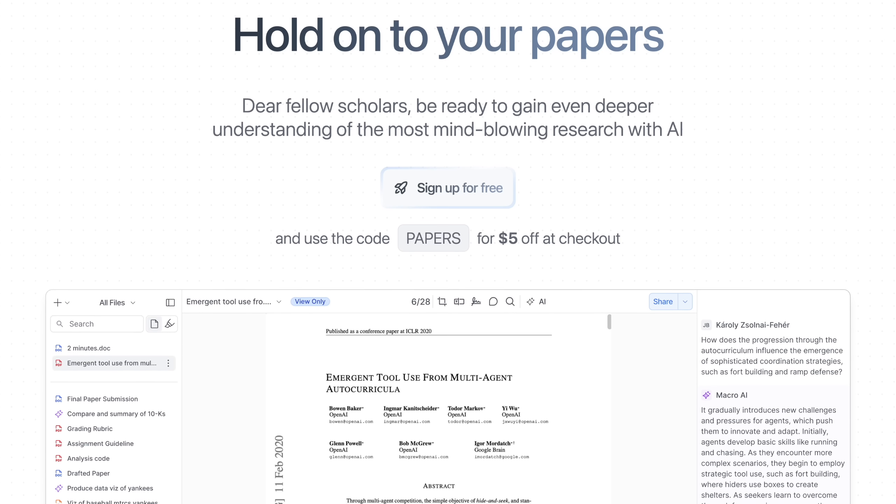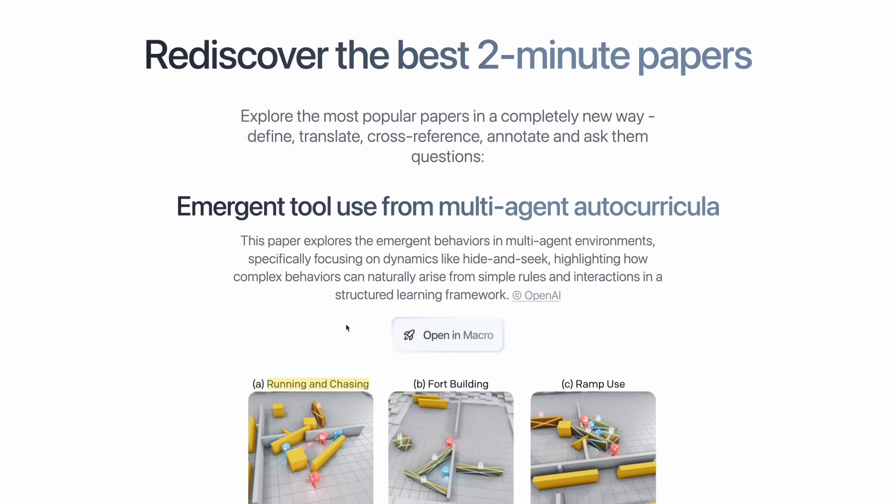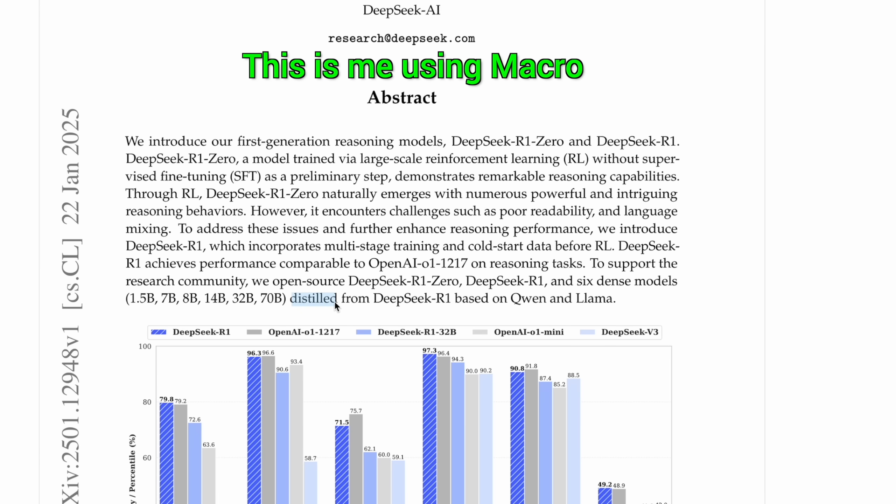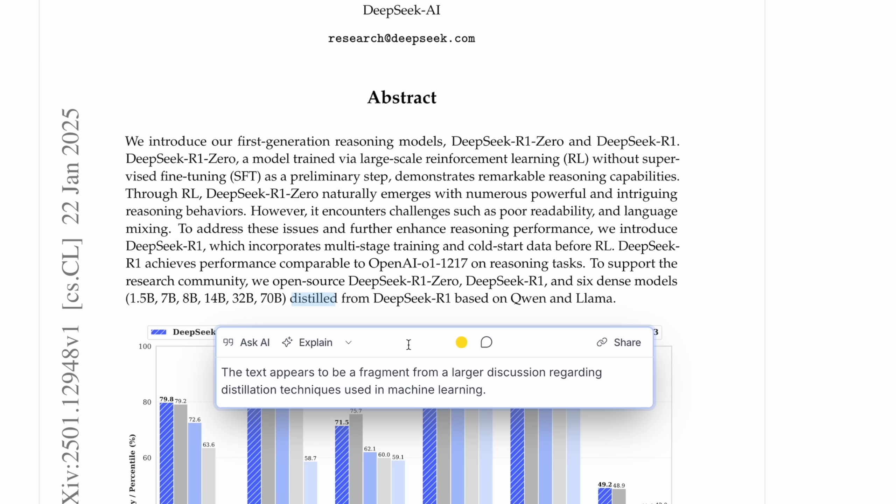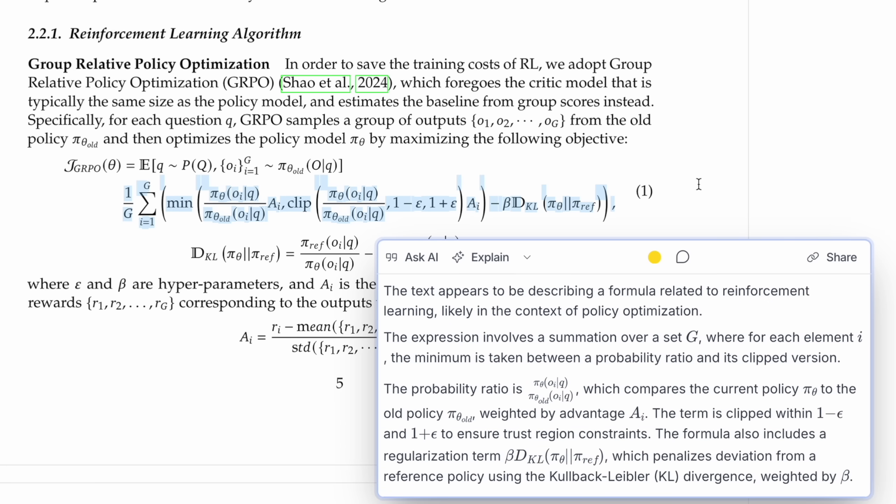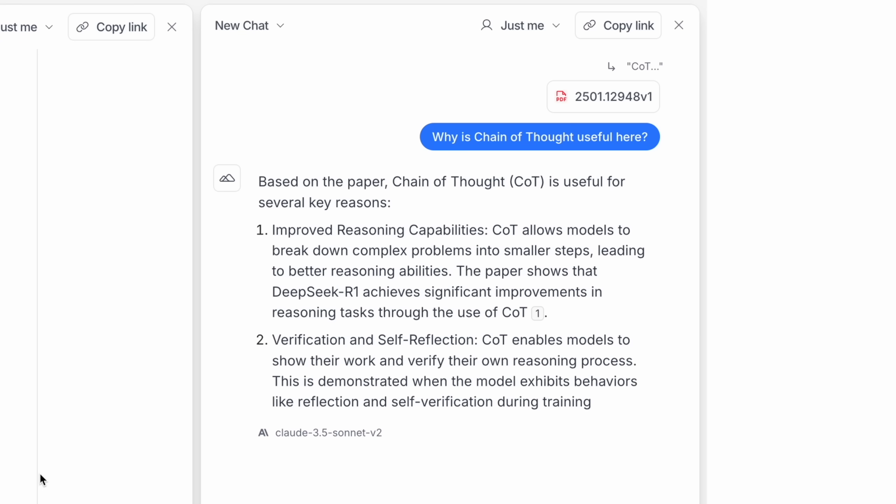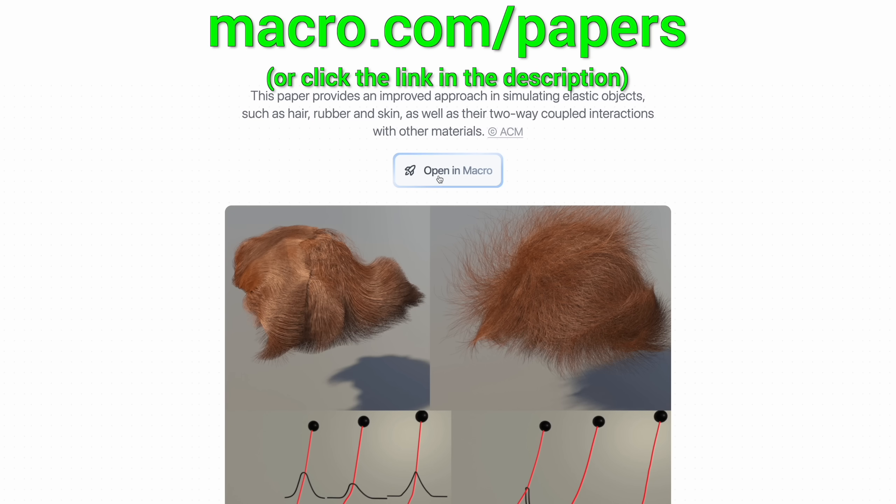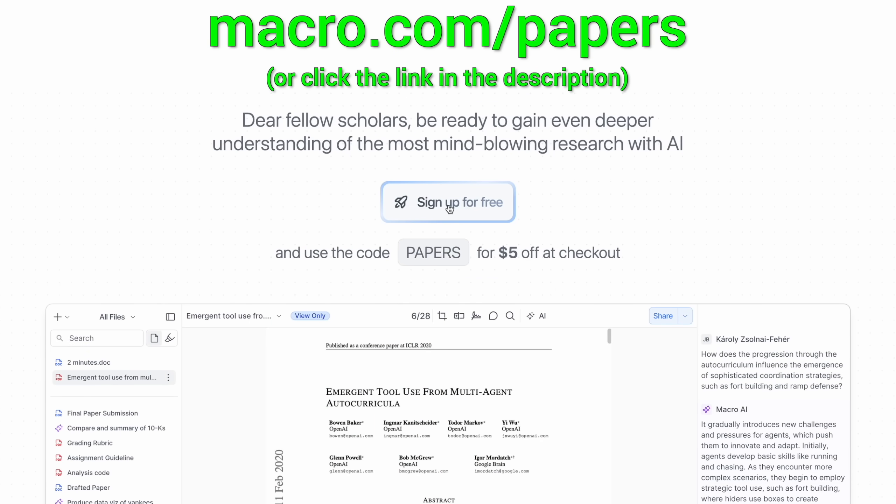Fellow scholars, if you are like me, it takes you a while to truly understand the paper, especially when it's not right in your area. Macro.com is a new AI document reader that gives you superpowers. Click on any term or figure, and it explains it to you without leaving your page. You can even talk to the paper or ask questions too. Try it for free at macro.com/papers and get five dollars with the code papers.